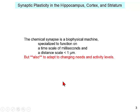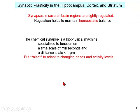The synapse is a biophysical machine specialized to function on a time scale of milliseconds, a distance of microns. However, the synapse also needs to adapt to the changing needs and requirements of the organism and its changing activity levels. Therefore, synapses need to be regulated in almost every brain region in order to maintain homeostatic balance, while at the same time this regulation allows synapses to change so they're storing information in neural circuits.